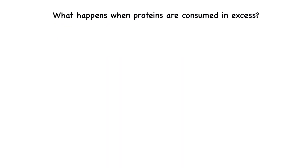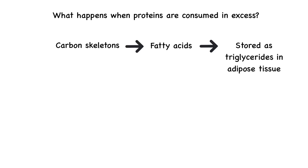What happens to excess amino acids when protein intake is higher than your body's needs? If these amino acids are not used for protein synthesis or energy through protein catabolism, then their carbon skeletons can be converted into fatty acids and stored as triglycerides in adipose tissue. However, this is not the body's preferred route — converting protein into fat is inefficient and rarely happens under normal dietary conditions.